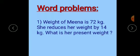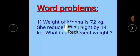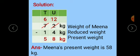Now weight of Meena is 72 kg and she lost her weight by 14 kg. And we have to calculate her present weight. Means here we will subtract 14 from 72. So in solution, first number is 72 kg - weight of Meena - minus 14 kg, reduced weight.